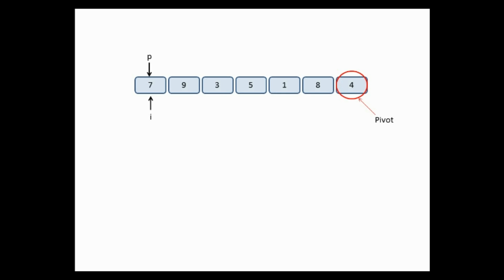We have 7 at index I and our pivot value is 4. Is 7 less than 4? No, so I is moved to the next location. 9 is also not smaller than 4, so I moves again. Then we reach 3: 3 is smaller than our pivot value, so 3 and 7 (which is pointed to by P) are swapped. 3 comes to the first position and 7 goes to index 2.